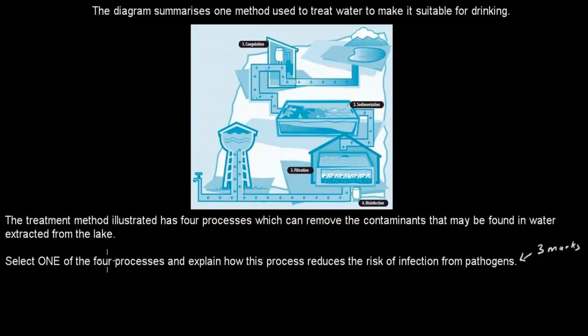and disinfection here. Select one of the four processes and explain how this process reduces the risk of infection from pathogens. And that's worth 3 marks. So when you're ready, press pause, attempt the question, and then press play when you're done.